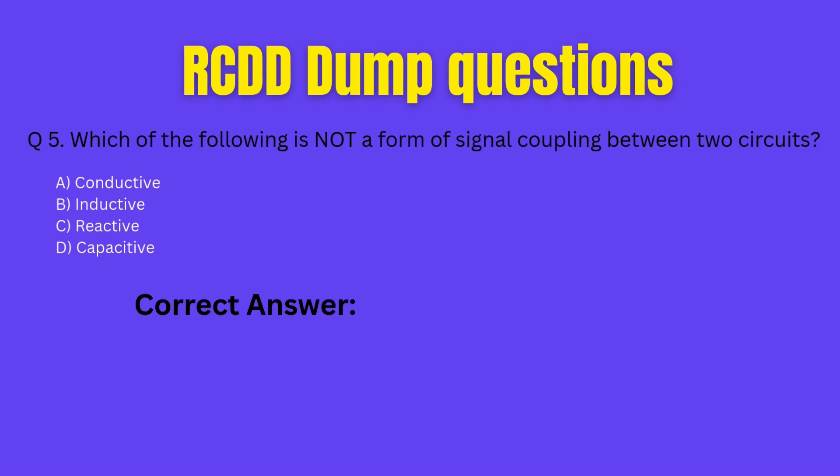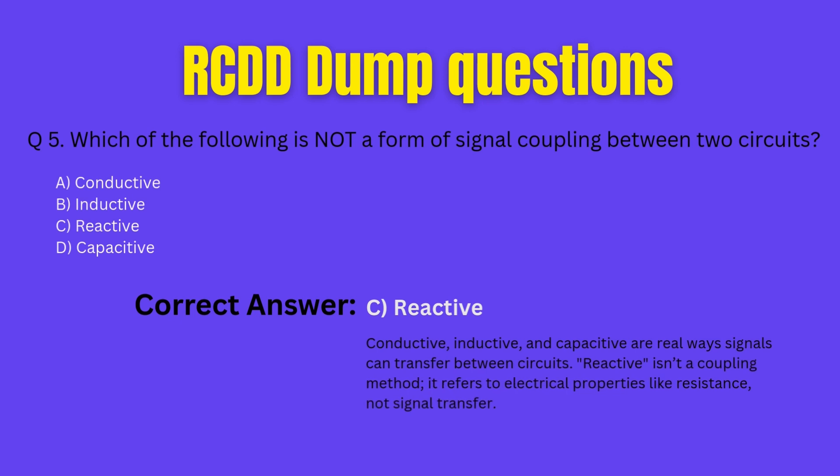Let's check the correct one. Correct answer: C. Reactive. Explanation: conductive, inductive, and capacitive are real ways signals can transfer between circuits. Reactive isn't a coupling method — it refers to electrical properties, not signal transfer.